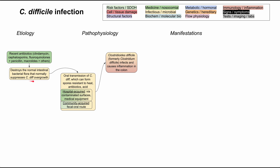This allows the C. diff that's normally in your gut — kept in check by your normal gut microbiome — to grow more than it should and overtake the other bacteria. Then when you have oral transmission of even a small amount of C. diff, it can spread, infect, take over, and cause inflammation in your colon.